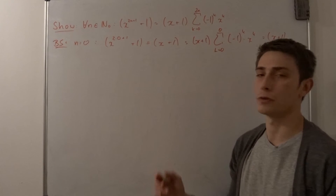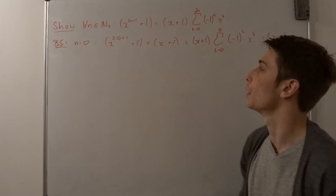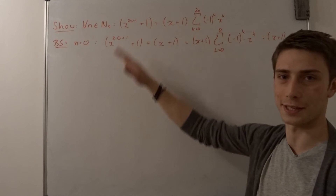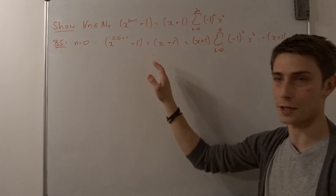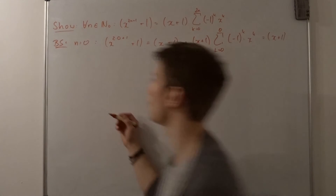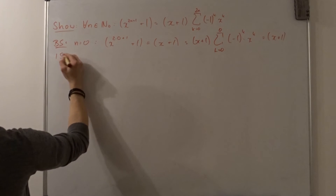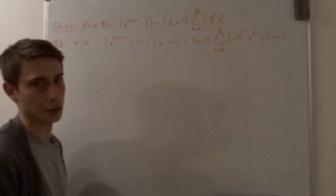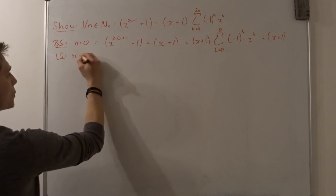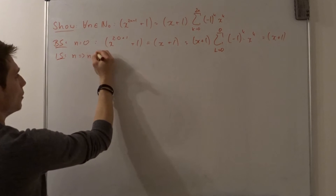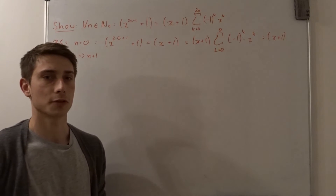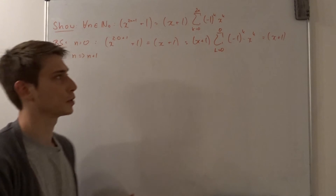Next, we are going to state our inductive hypothesis — it's written up above so I'm not going to write it again. Now let's start with the inductive step, the most difficult part — though it's actually pretty trivial. We want to show that n implies n plus 1.